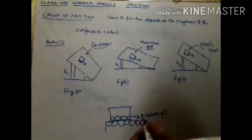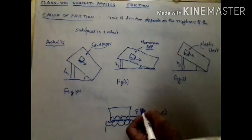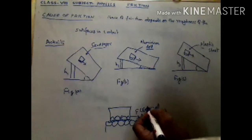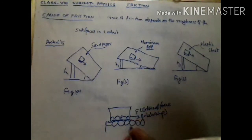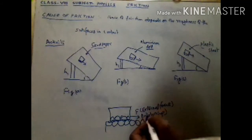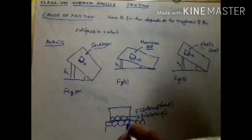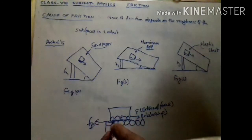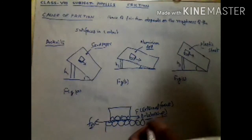This interlocking only breaks when we apply some external force. The external force overcomes or unlocks the interlocking. The amount of external force applied to break or unlock the interlocking is equal to the force of friction. So the force of friction is due to the interlocking of the irregularities present on the surfaces in contact — this is the basic cause of the force of friction.